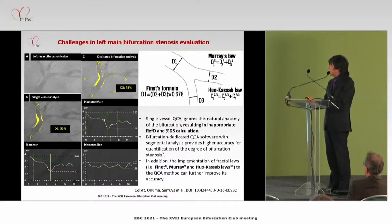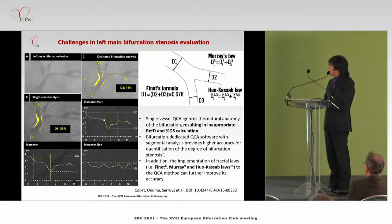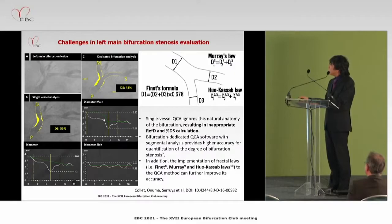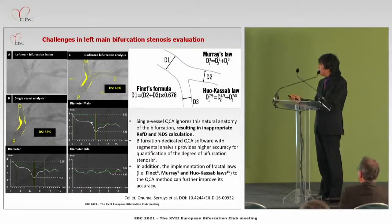The single-vessel QCA algorithm ignores the natural anatomy of bifurcations and does not account for tapering. Using single-vessel analysis, the MLD was 1.3mm and percent diameter stenosis was 55%. Using bifurcation-dedicated QCA that accounts for natural tapering, the stenosis becomes 48%. Additionally, especially in cases of diffuse left main disease, implementation of fractal laws — Finet Law, Murray Law, or Huo-Kassab Law — to the QCA method can further improve accuracy.